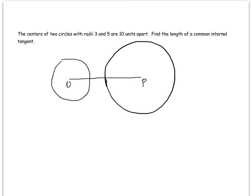Each radii is 3 and 5, and I'm looking for the length of the common internal tangent, so I'm going to draw that in. The common internal tangent should go through the center and be tangent to both circles.